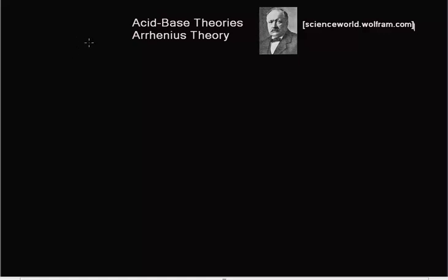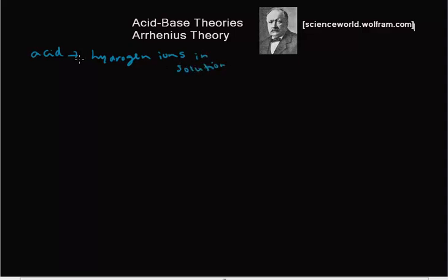Svante Arrhenius was a Swedish physicist and chemist and he was one of the first scientists who defined what an acid and base are. So according to him, an acid is a substance that produces hydrogen ions in solution. Let's take an example and understand what this means — an acid is a substance that produces hydrogen ions in solution.